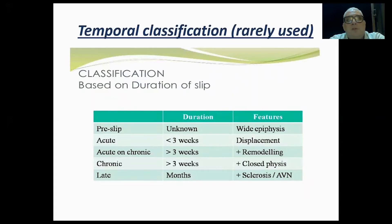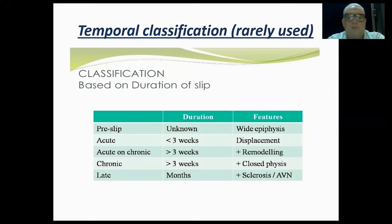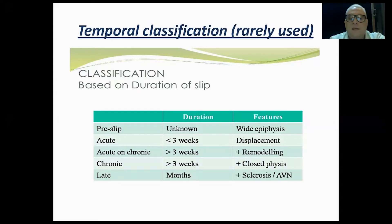Classification based on duration of slip: there is a pre-slip phase, in which there is widening of the epiphysis diagnosed best with MRI. Then acute, chronic, and acute-on-chronic forms as discussed. In the late phase, you find sclerosis, avascular necrosis (AVN), or osteoarthritis, indicating long-standing disease.